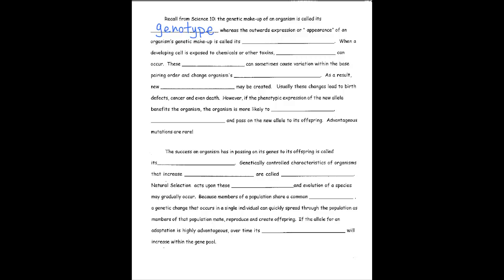Whereas the outward expression or appearance of an organism's genetic makeup is called its phenotype. You're going to hear these words a lot as we're talking about evolution, so make sure that you have these two things clear in your mind. One way to remember this is genotype starts with G, the same as gene. Another way to remember is phenotype starts with pH, which is the same as physical.